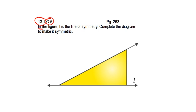This question says: in the figure, L is the line of symmetry. Complete the diagram to make it symmetric. This is the diagram given to us, and this line which you can see here, L, is the line of symmetry. We have to complete the figure so that it appears symmetric.